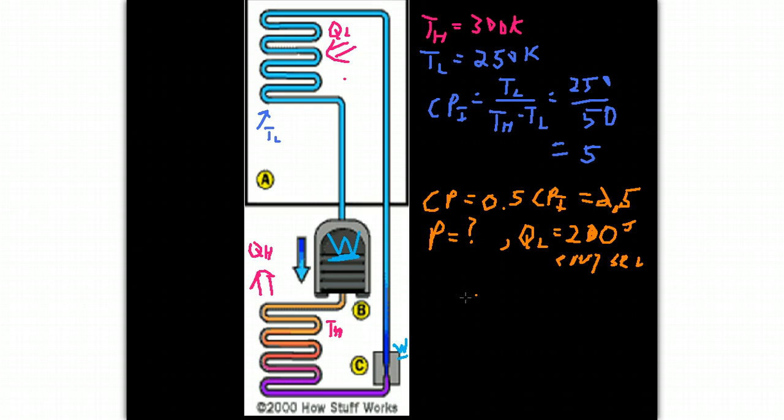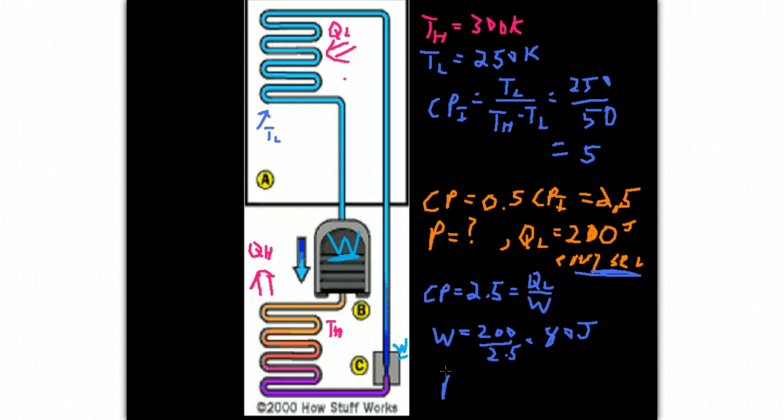So when you look at this, you have a coefficient of performance of 2.5. And we know that the coefficient of performance is the same as QL over work. And so we can rearrange this and say, well, the work that we have to do to remove 200 joules is equal to 200 divided by 2.5, which is the same as 200 times 2 divided by 5. So 400 divided by 5, I think that's about 80 joules. And because we did this every second, the power output that we need is 80 watts. This is not that intense. This is actually a pretty low power output for a refrigerator when it's running at capacity.